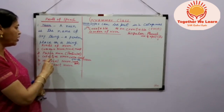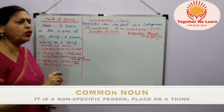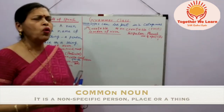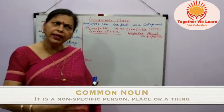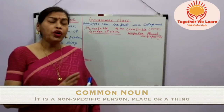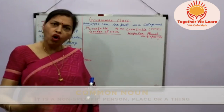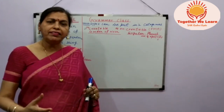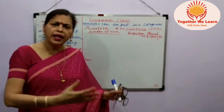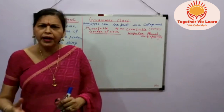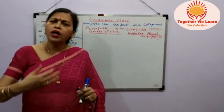Now I come to the first one — common noun. A common noun is a name given to any person, place, or thing in general, not to anything particular. Just as: fan, stool, table, friend, boy, girl — all are common nouns.